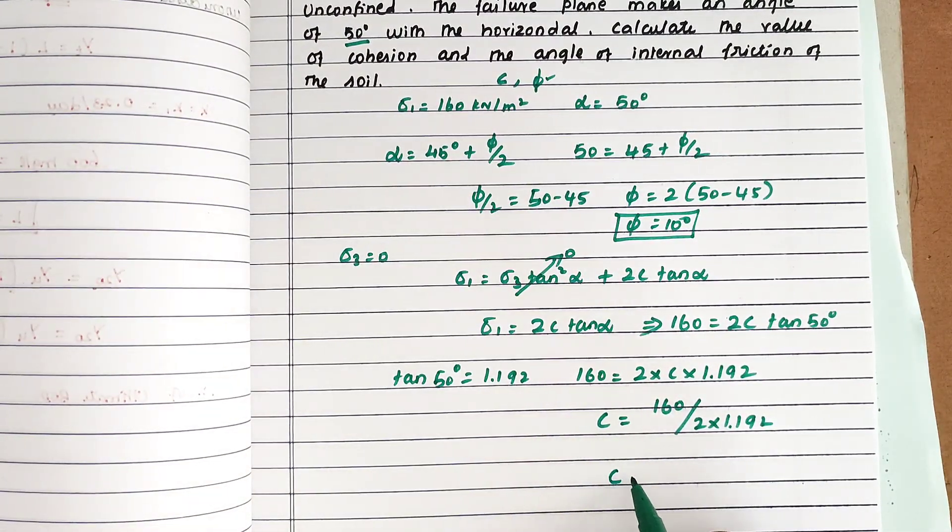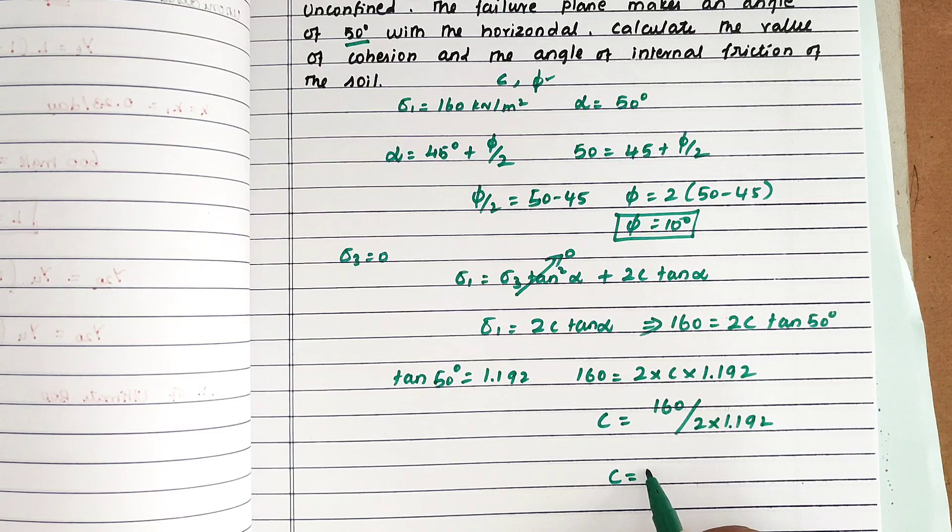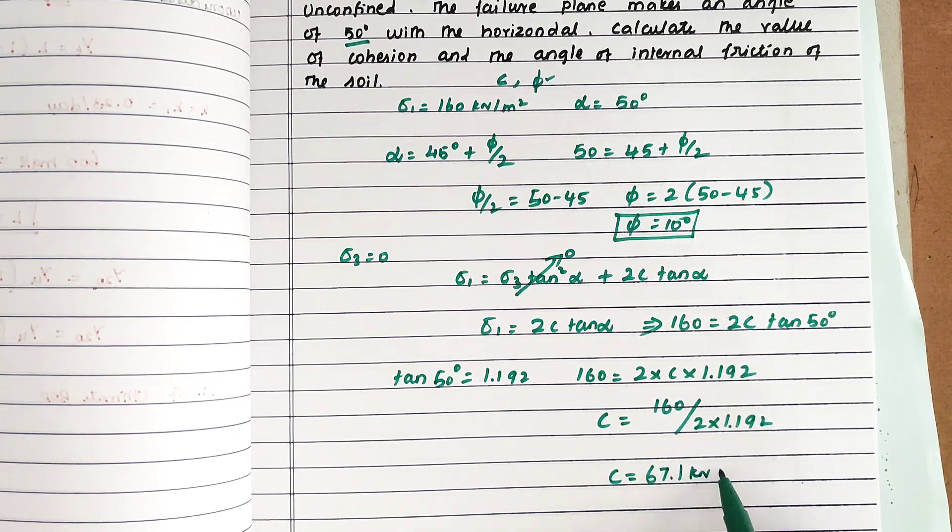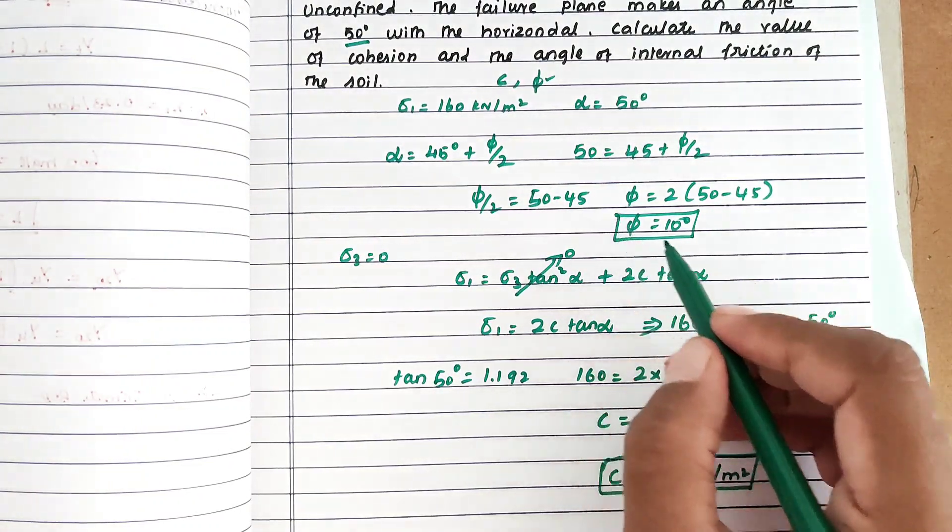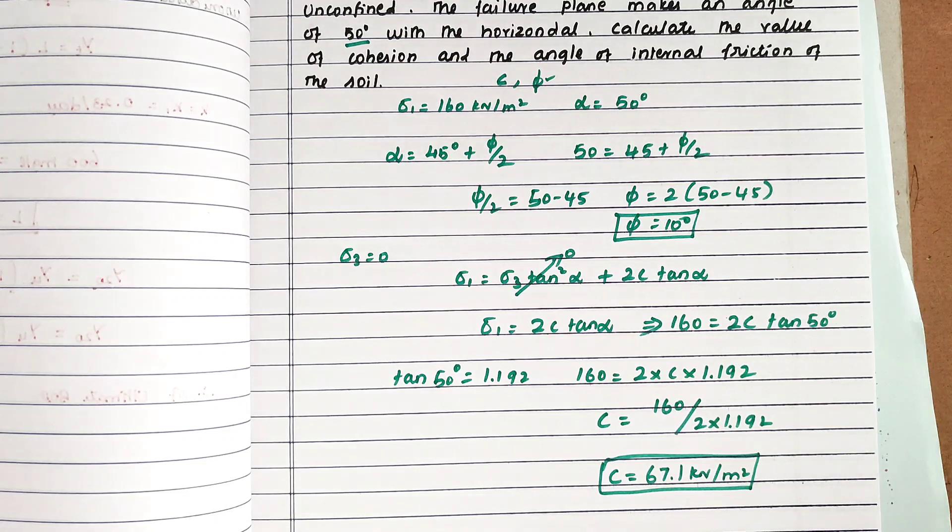Solving this, we get c equals 67.1 kN per meter square. So this is the cohesion, and we found phi, the angle of internal friction. This is the method to solve the problem. We will see more in the next video. Thank you.